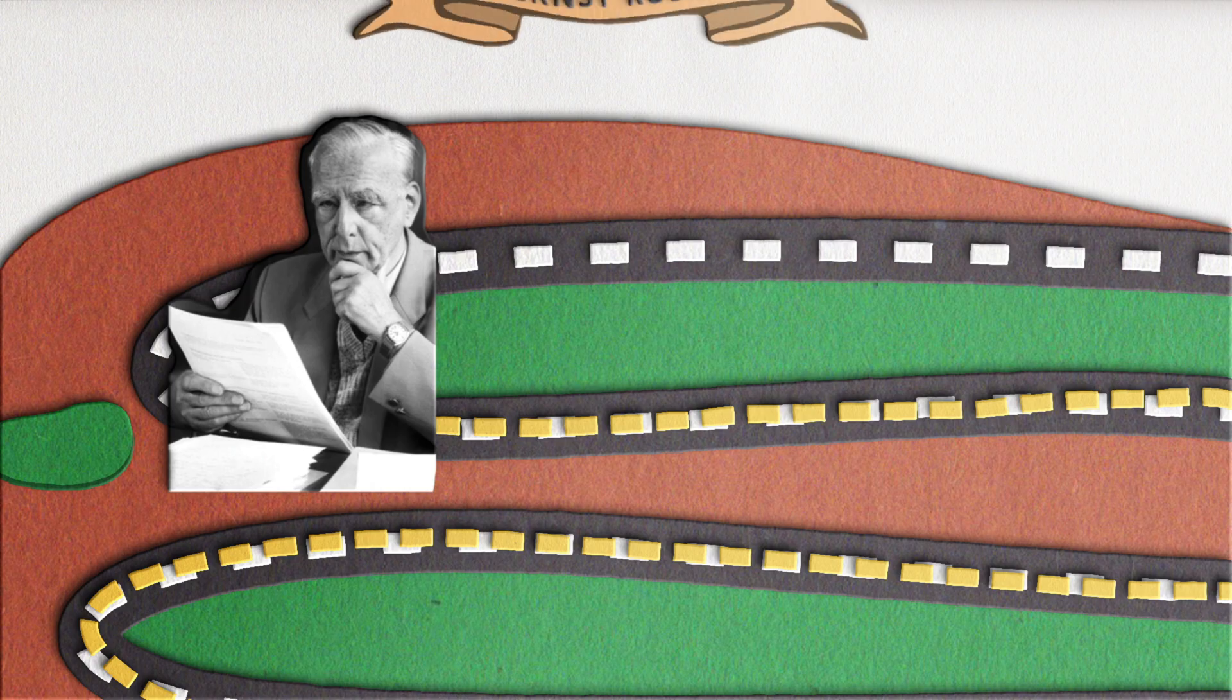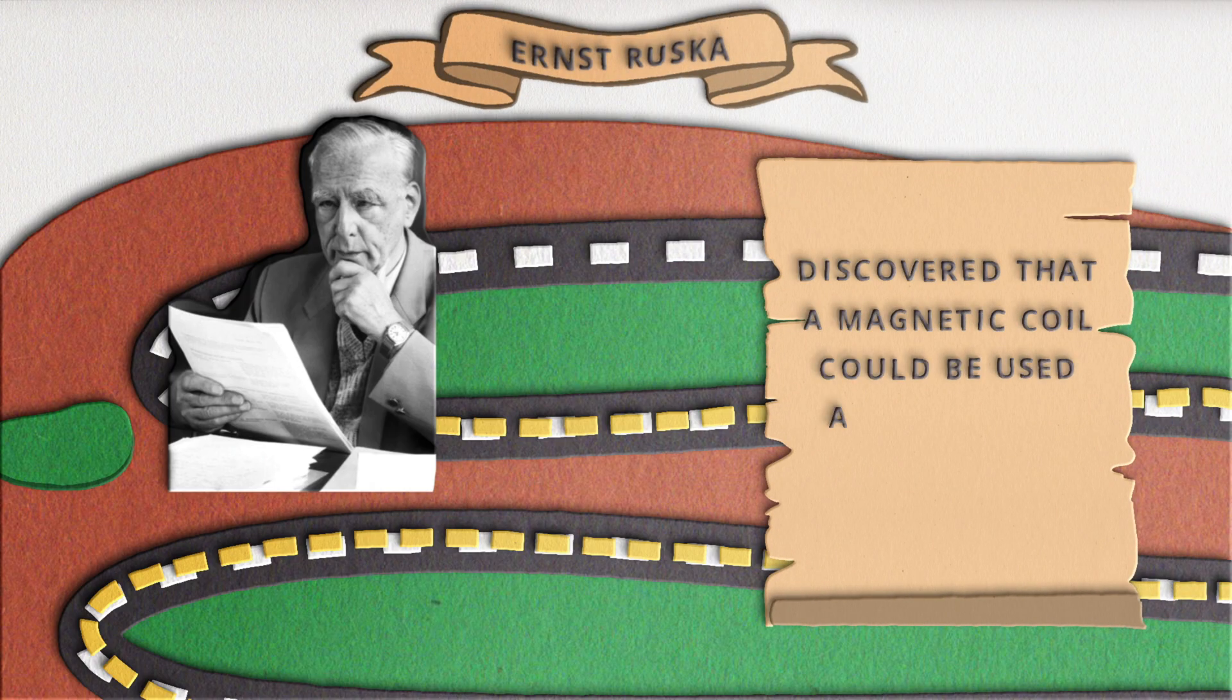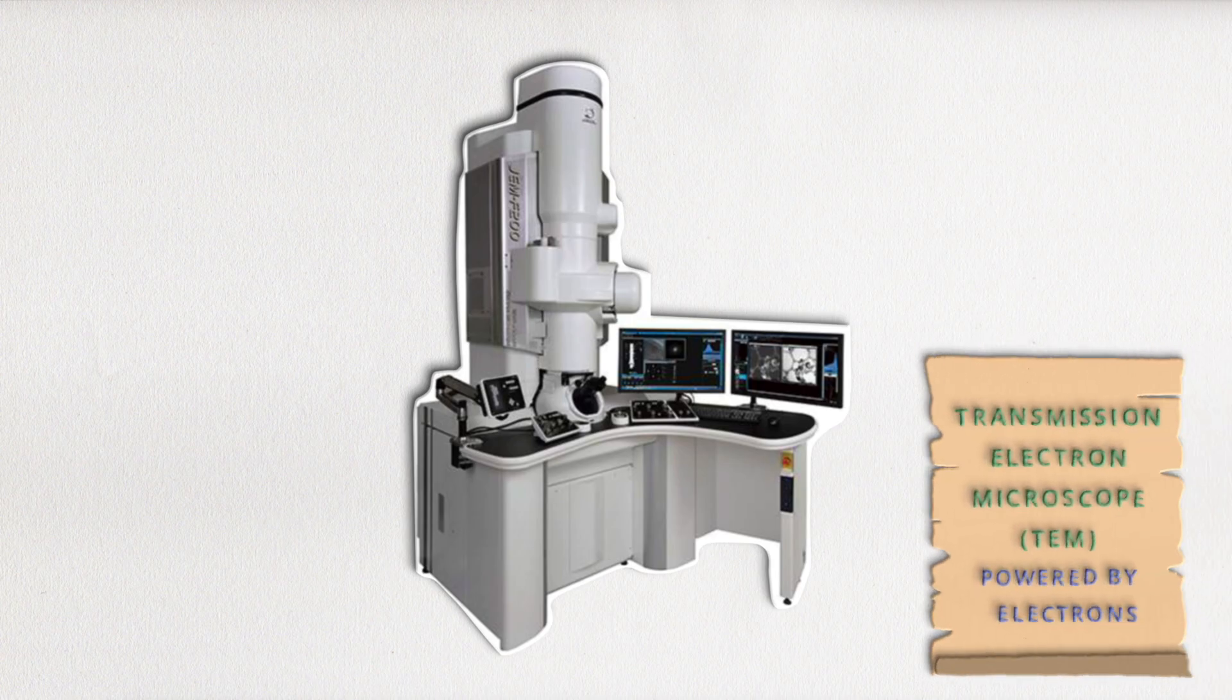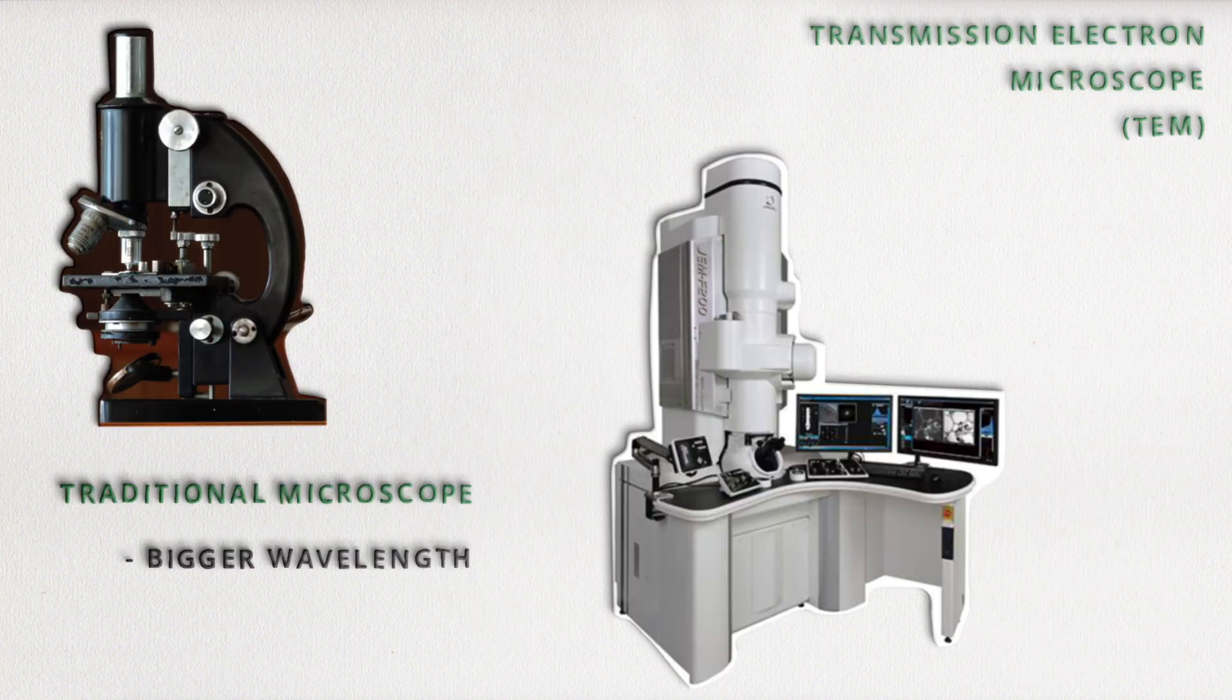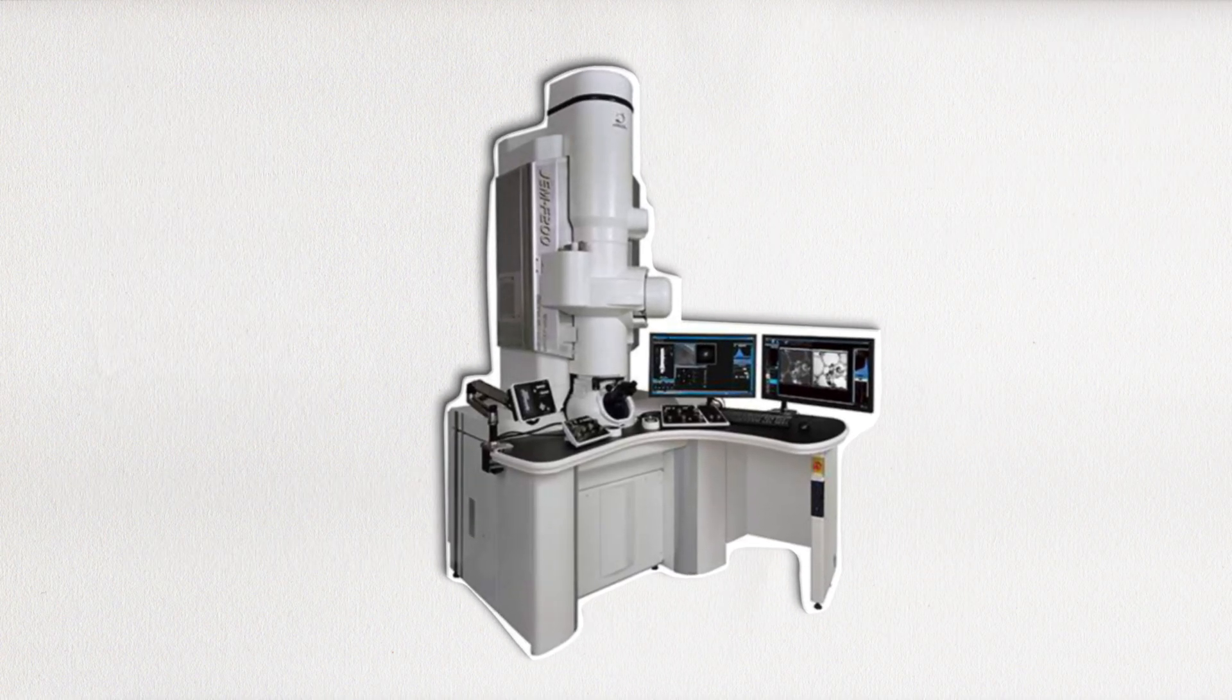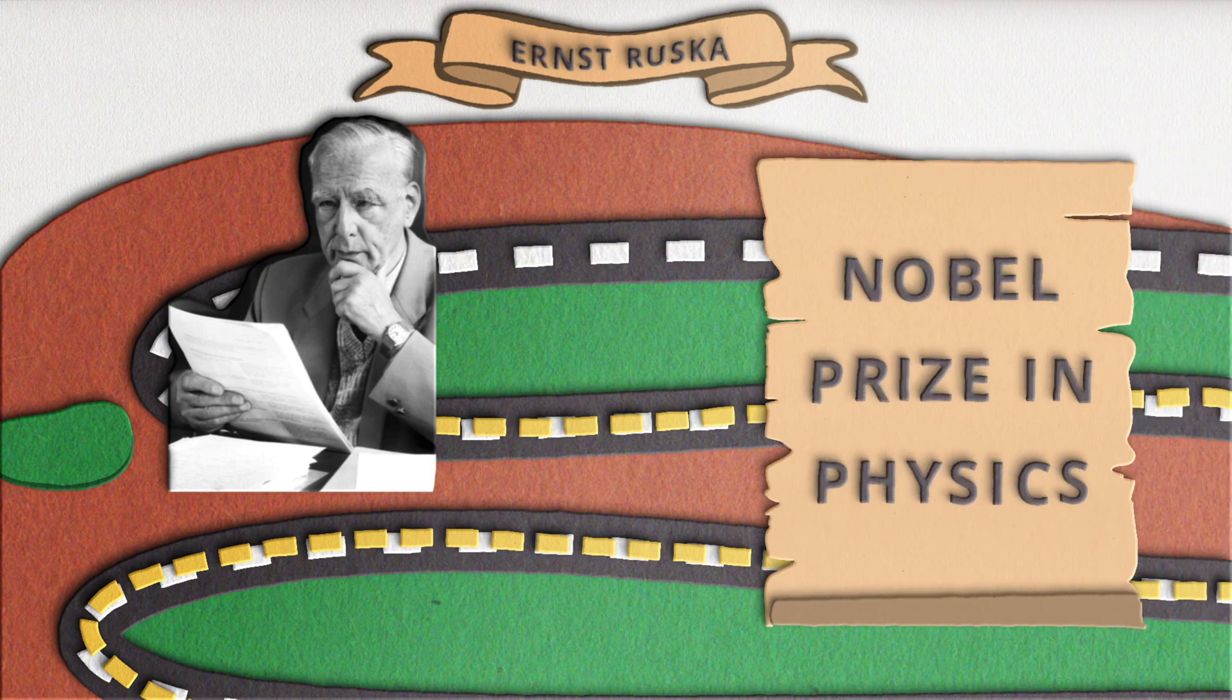In 1931, German physicist Ernest Ruska discovered that a magnetic coil could be used as a lens for electron beams. With that, the first electron microscope was born. Instead of using light just like the traditional microscopes, Ruska made a microscope that is powered by electrons, the Transmission Electron Microscope, or TEM. The much smaller wavelength of the electrons allowed for a much better resolution compared to a light microscope. Transmission electron microscopes can reveal the finest details of internal structure, in some cases, as small as individual atoms. Ruska would later win the Nobel Prize in Physics for this achievement.